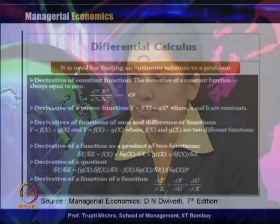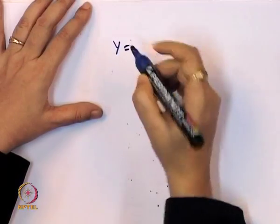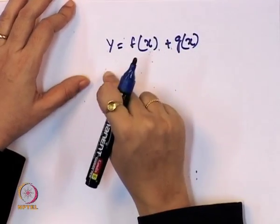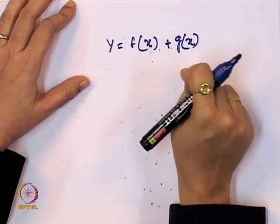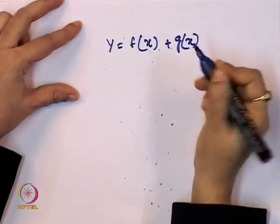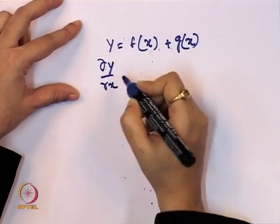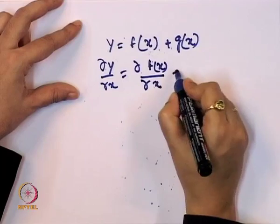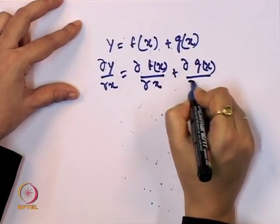Now we discuss the third category: the derivative of a function that is a sum or difference of functions. Sometimes the functional form is not a single variable — there is also a summation added to it. If y = f(x) + g(x), then dy/dx = df(x)/dx + dg(x)/dx.